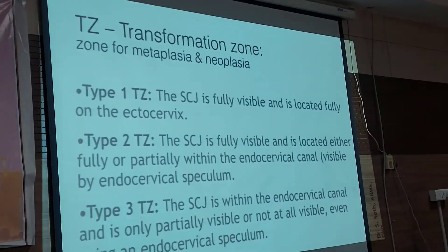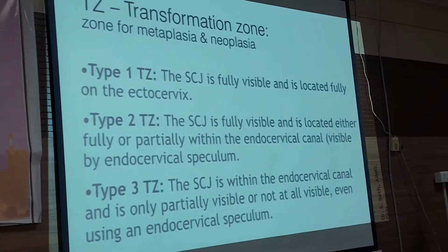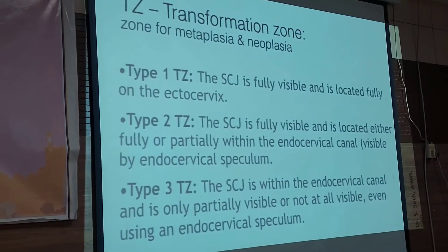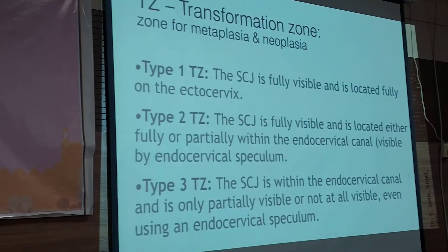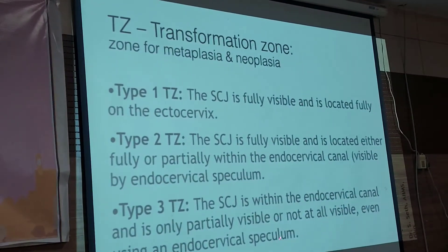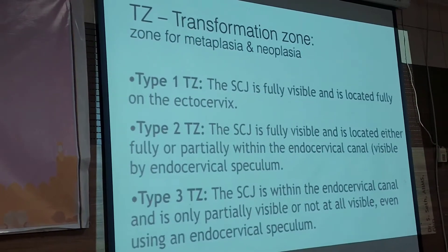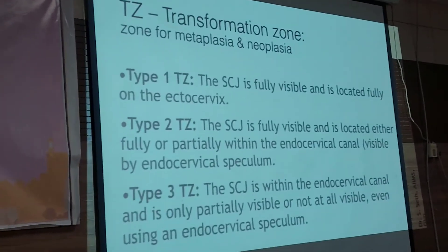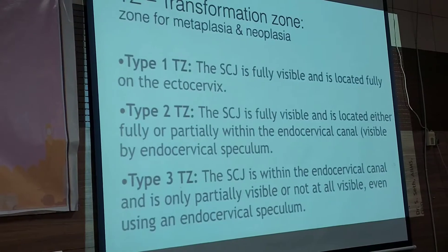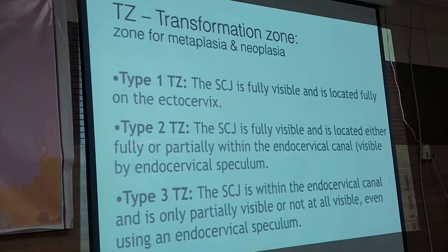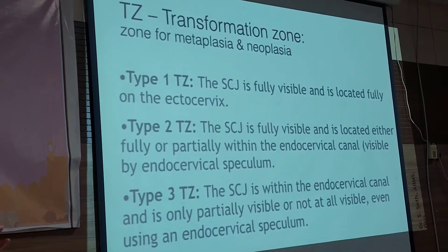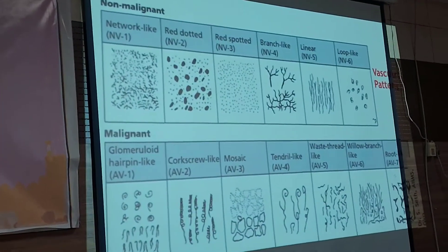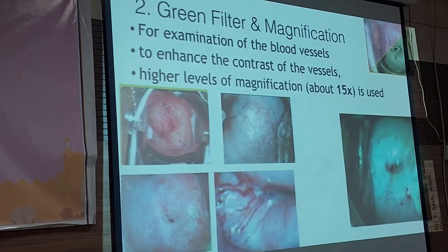Type 3 transformation zone is when part of the squamocolumnar junction cannot be visualized even after opening and dilating the cervical canal with the endocervical speculum. In TZ2, we can see it; in TZ3, we cannot see some part of the transformation zone. Therefore, in TZ2 and TZ3, endocervical sampling (ECC) is mandatory, and this must be clearly mentioned in the report so that others reviewing it understand the colposcopy was not fully adequate.